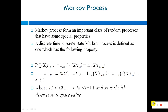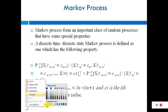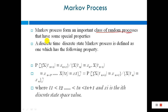In the previous lectures we went through the random properties of telecom traffic and why we apply random processes on telephone traffic. Today we are going to talk about Markov process. Markov process forms an important class of random process that has some special properties. It falls in the category of random process and has some special properties. This is a discrete time, discrete state Markov process.